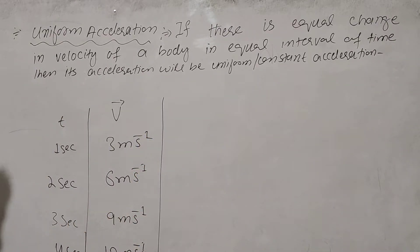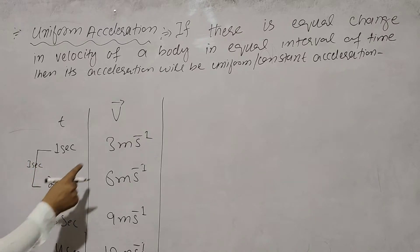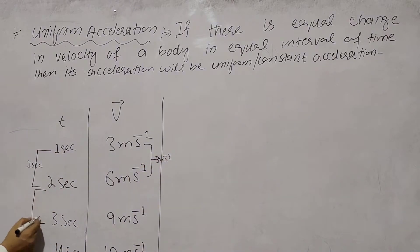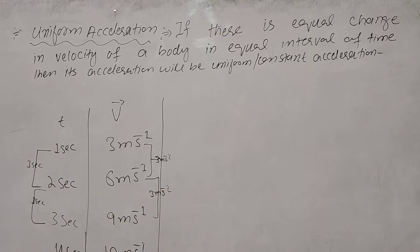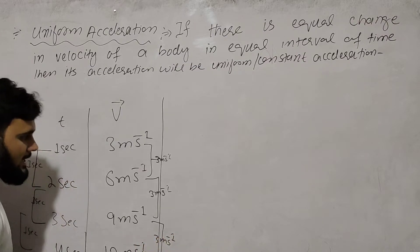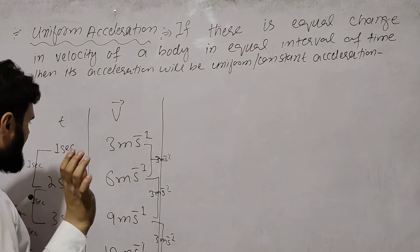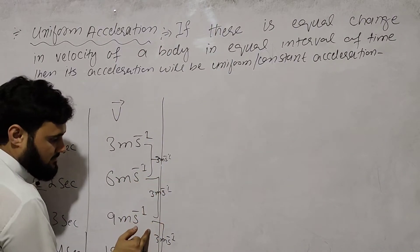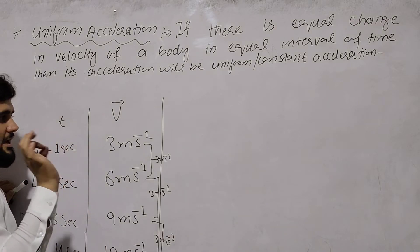Now the question is: what is the change in velocity? Between one second and two seconds the change in velocity is 3 meters per second. That same 3 meters per second change occurs each interval. So the change is 3 meters per second, 3 meters per second, 3 meters per second — the same change every time. When you see this, your body has uniform acceleration. This is uniform acceleration.